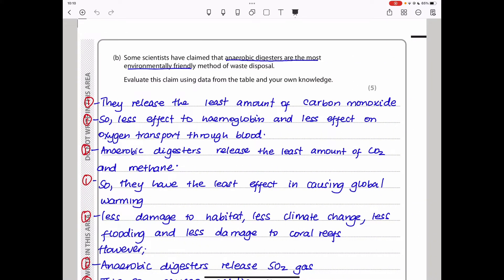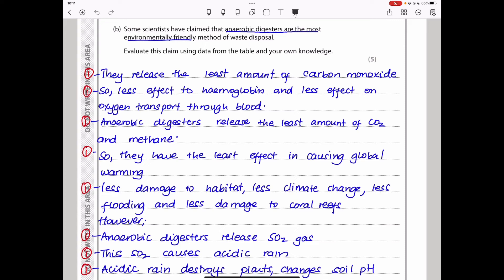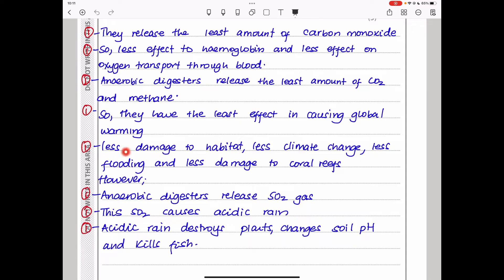Remember we are evaluating, so we have to give the pros and the cons. I say they released the least amount of carbon monoxide, which is good. So there will be less effect to hemoglobin and less effect on oxygen transport through the blood. Also, anaerobic digesters released the least amount of carbon dioxide and methane. So they have the least effect on causing global warming. Also, there is less damage to habitats because there is less climate change. There will be less flooding, less damage to coral reefs and so on.